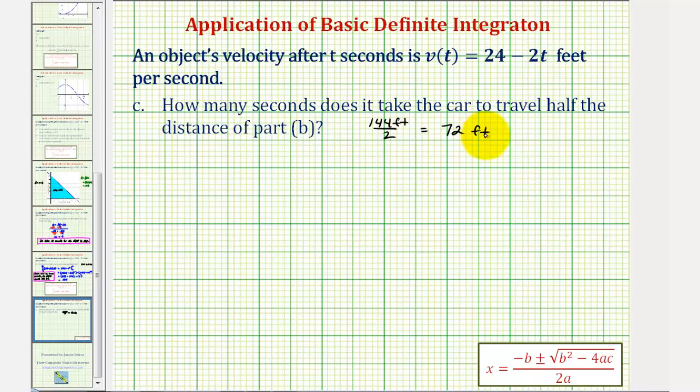Now a couple ways of doing this, but let's set this up as a definite integral. So let's let x equal the time to travel 72 feet. So our integral would be the integral of our velocity function, 24 - 2t,